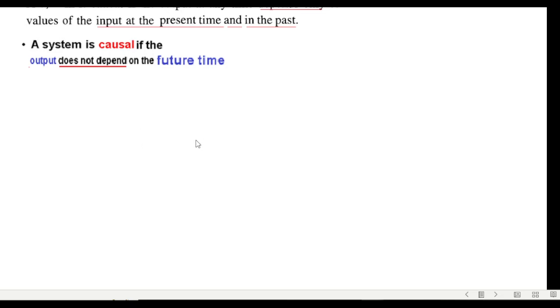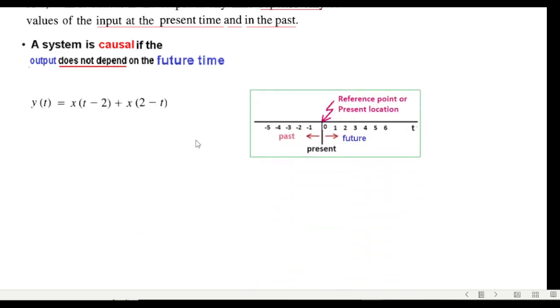The definition I'm just reproducing. This was the system. Put t equals zero. Putting t equals zero we get y(0) here, we get x(-2) and here we get x(+2). Now if you see the time diagram we are here at this point, the present time, so x(-2) is the past time and x(+2) is the future time.